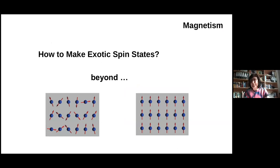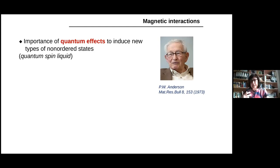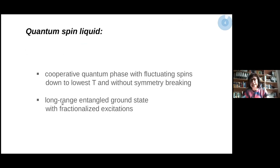Our goal is to find or make exotic spin states. I'm going to work and talk about magnetism. What we want to do is to have exotic spin states that are beyond paramagnets, antiferromagnets, or ferromagnets. Here I would like to quote Phil Anderson, who already in the 70s, while thinking about the ground state of a triangular lattice, was talking about the importance of quantum effects in order to induce new types of non-ordered states. The concept of a quantum spin liquid started from his pioneering work. Even though we know nowadays that the triangular lattice has an ordered ground state — a 120-degree ordered state — we do have quantum spin liquids in other types of systems.